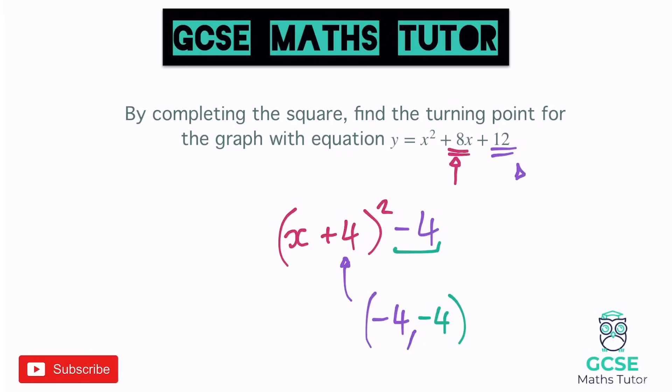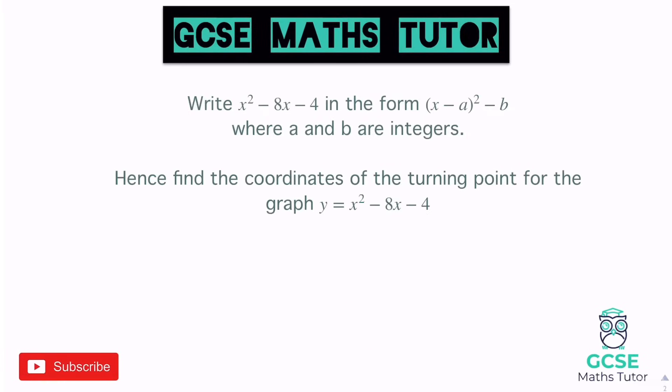Let's look at a few others — you'll see some similarity between these questions. This one says: write x² − 8x − 4 in the form (x − a)² − b, where a and b are integers. It doesn't say complete the square, but that is completed square form, so that's what we're going to do. It then says hence find the coordinates of the turning point for the graph with equation x² − 8x − 4.